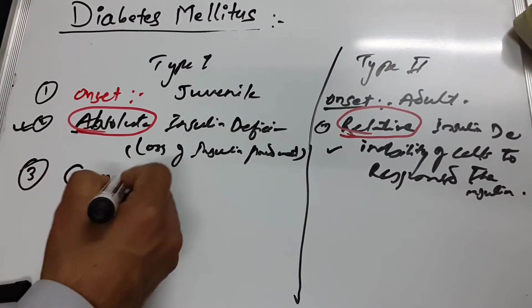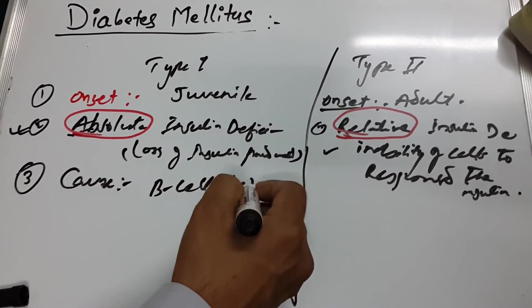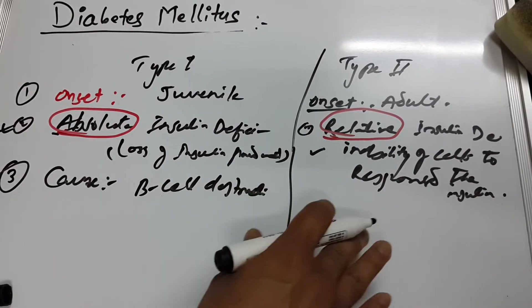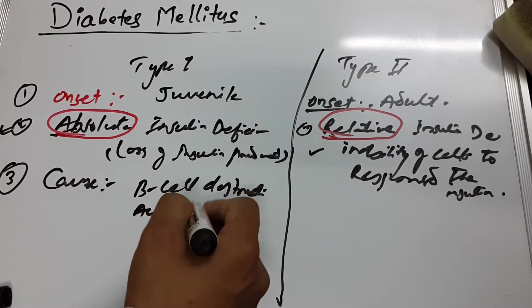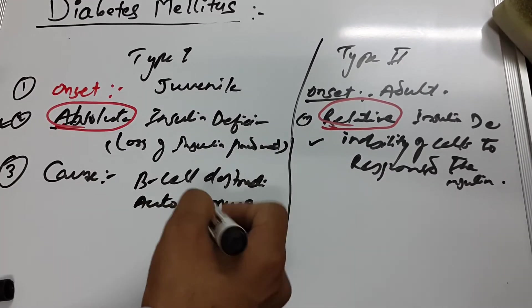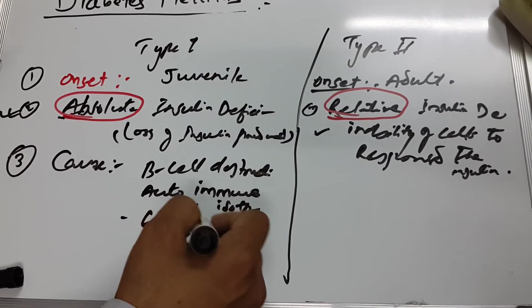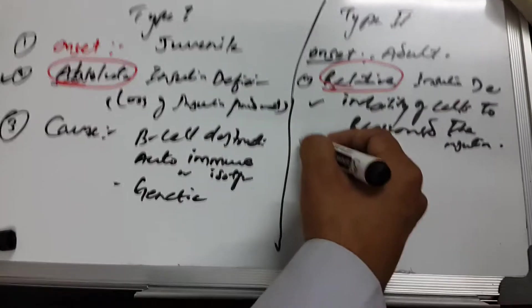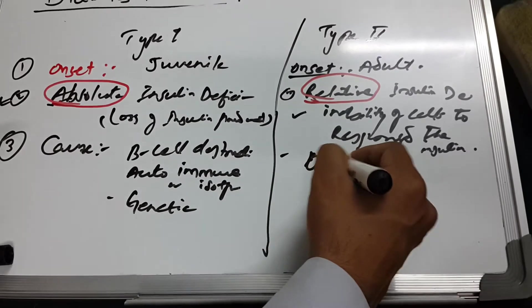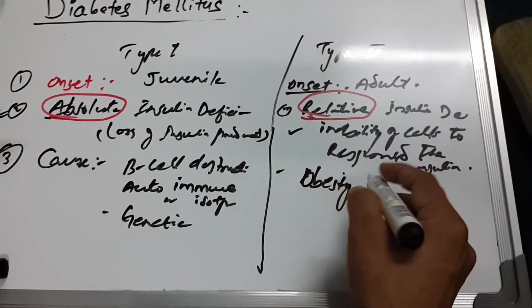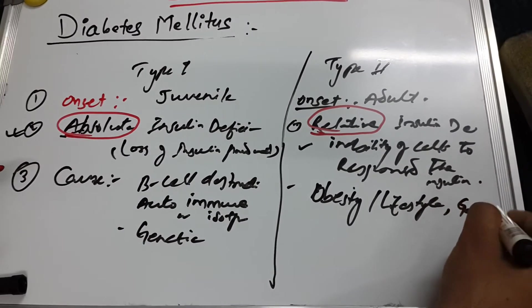The cause of Type 1 is beta cell destruction — complete destruction of beta cells means no insulin is produced. This may be due to autoimmune or immune-mediated causes, or may be idiopathic, but is mostly associated with genetic factors. Type 2 is most often associated with obesity, lifestyle, genetics, and beta cell dysfunction.